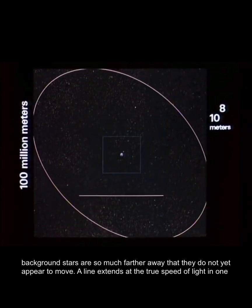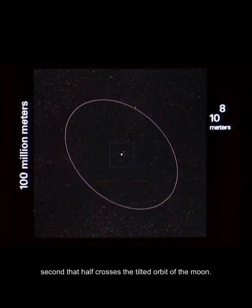A line extends at the true speed of light. In one second, it half crosses the tilted orbit of the moon.